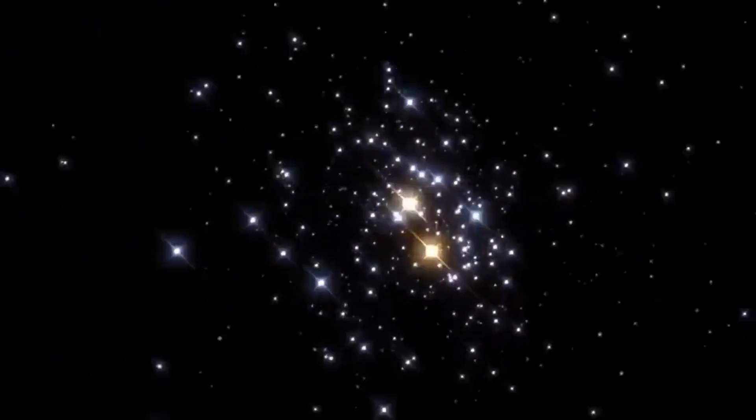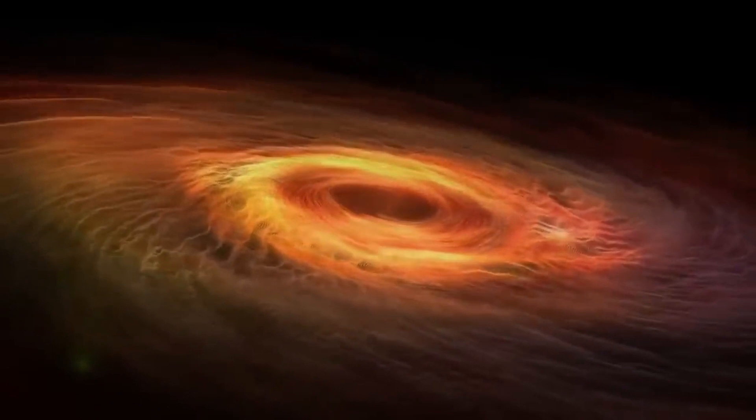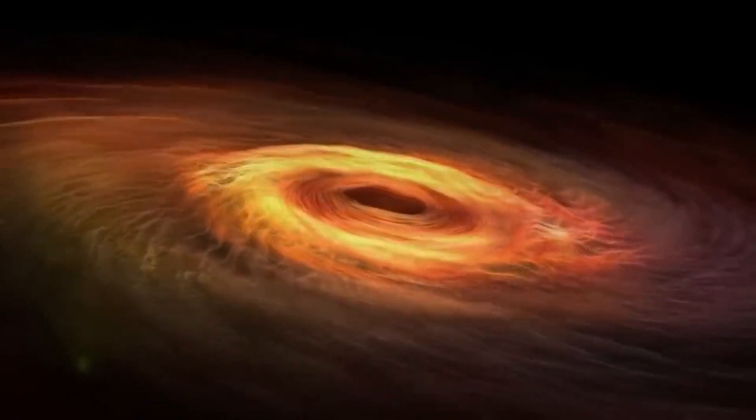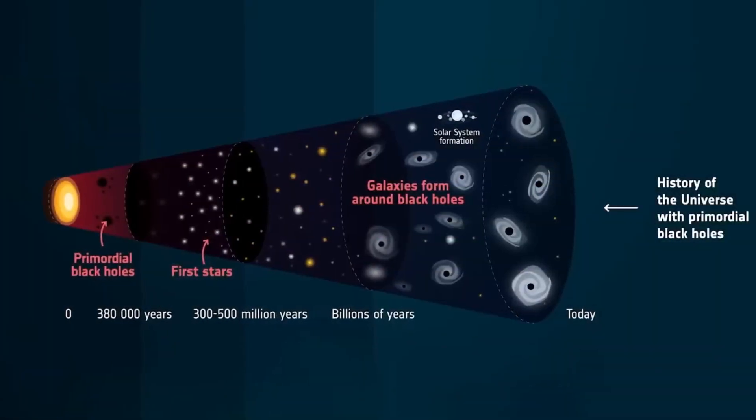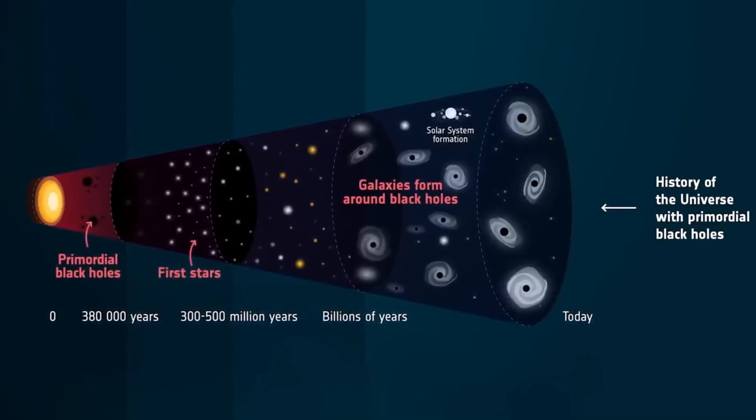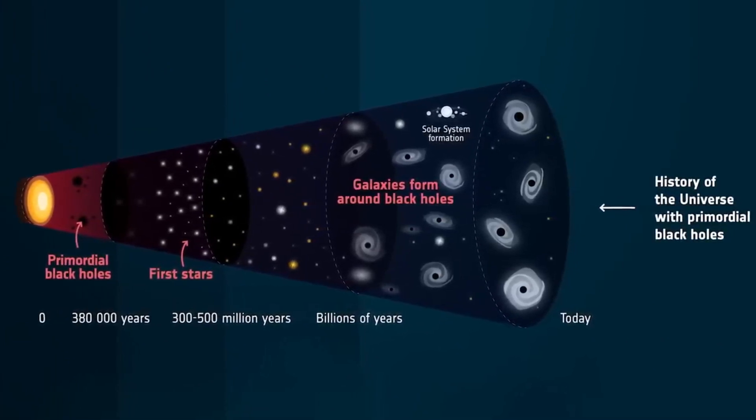Returning to the formation of intermediate-sized black holes, the third hypothesis, which is the hardest to test, suggests that intermediate-sized black holes are a primordial type of black hole formed within a second after the Big Bang from hot and dense pockets of primordial matter. These black holes survived and exist until today.